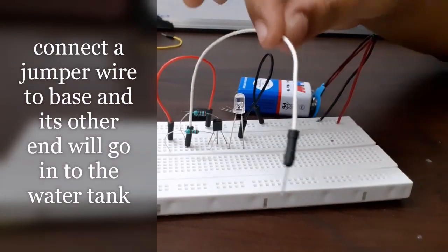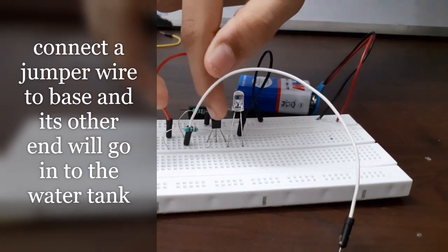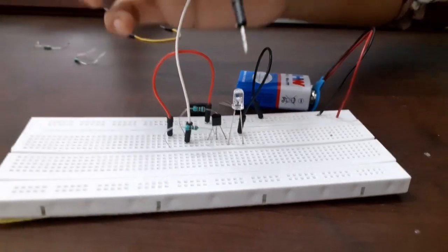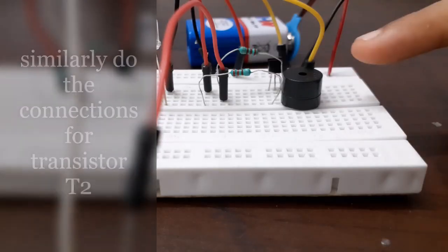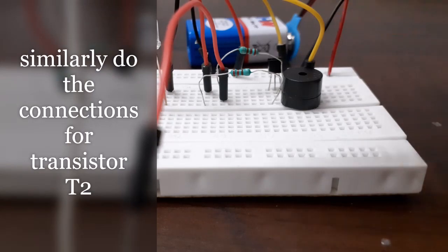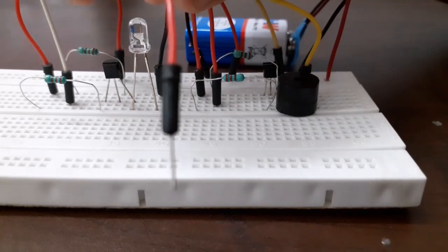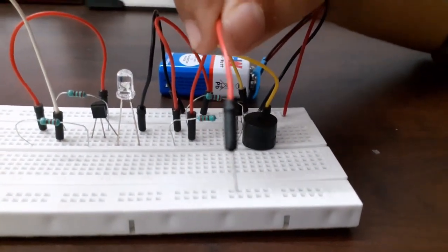Take a connecting wire and connect one of its end to the base node of the transistor, and its other end will go into the water tank. In the same way, I have done the connection for transistor T2. This is the wire coming from the base of the transistor T2 which will go into the water tank.